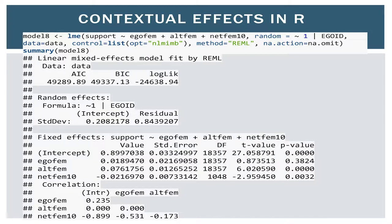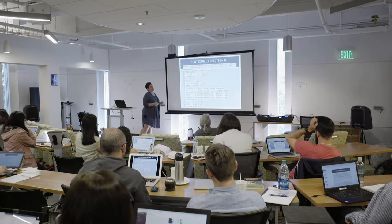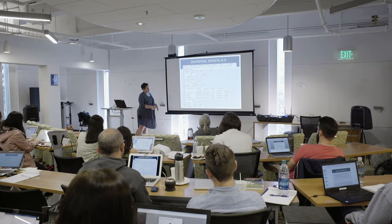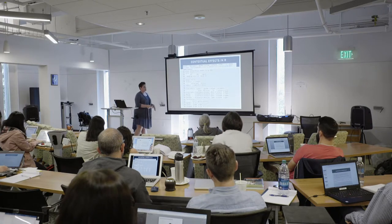So then I run my model with ego gender, alter gender, and the proportion of women in the network in tens. Ego gender is still not significant. Alter gender becomes slightly stronger. And the effect of network gender — the proportion of women in the network — actually has the opposite effect. So if the alter is a woman, that's associated with an increase in support provided, all else equal. But if that same alter is embedded in a network with a higher proportion of women, they're less likely to provide support, and that's significant. This is a situation where the network-level effect and the alter-level effect are in opposite directions and both significant.